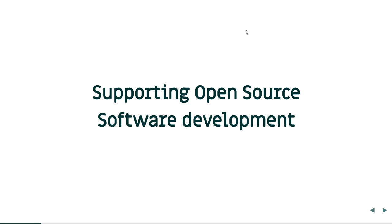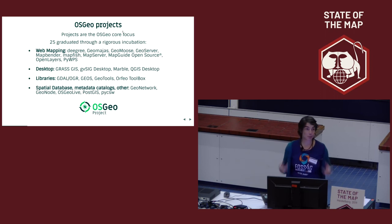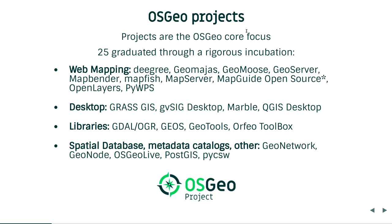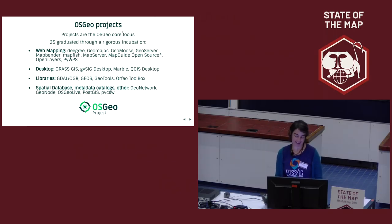Our goal is supporting open source software development, which means we support projects. We have at the moment 25 graduated projects. All these projects go through an incubation process where we review the code, watch whether the community is active, whether the mailing list is there, a code of conduct, a license, and whether all this information is provided. After this incubation process, software projects become OSGEO projects. We have projects from different categories: web mapping, desktop, libraries, spatial data, metadata catalogs and others. Some of the projects combine together and share ideas.